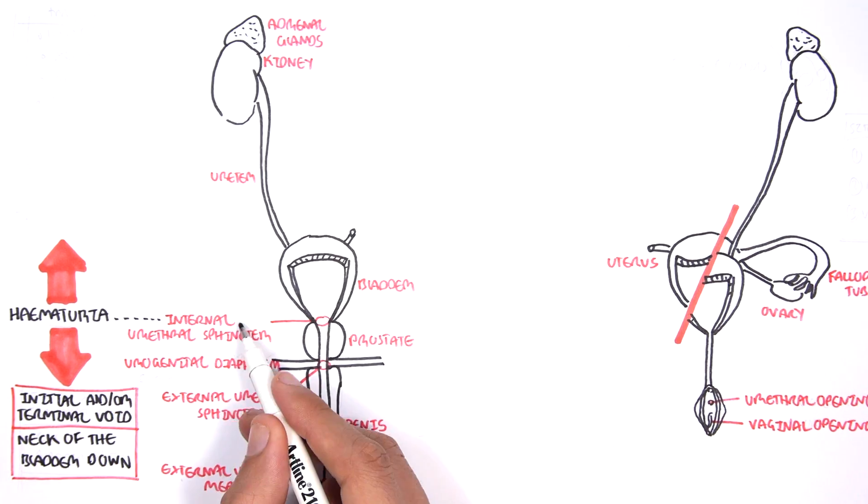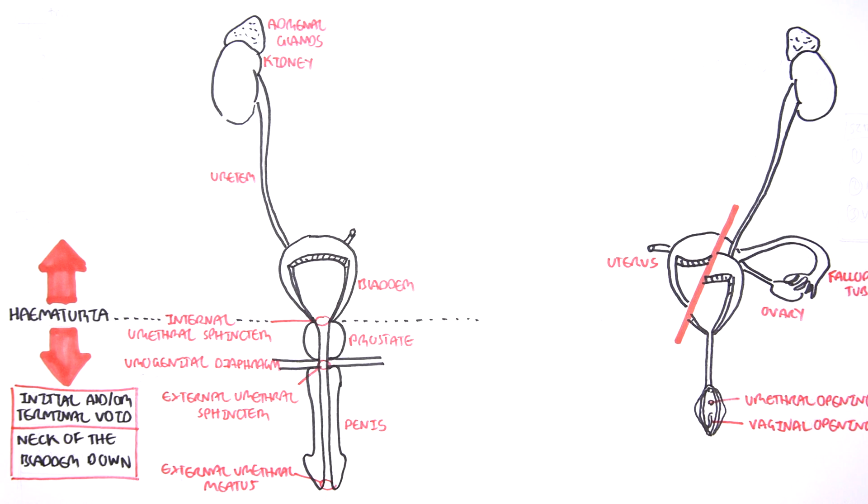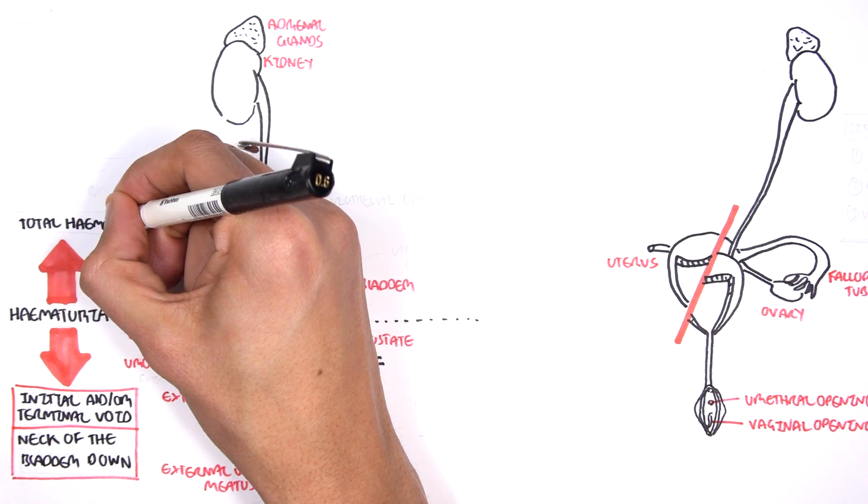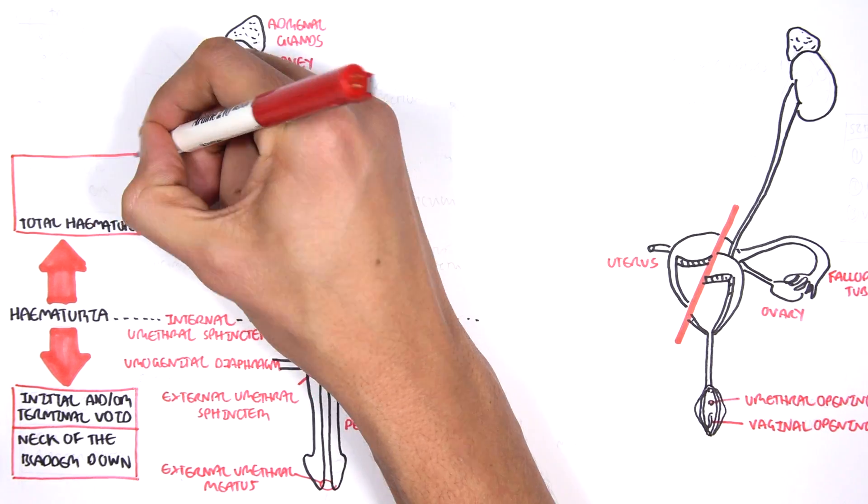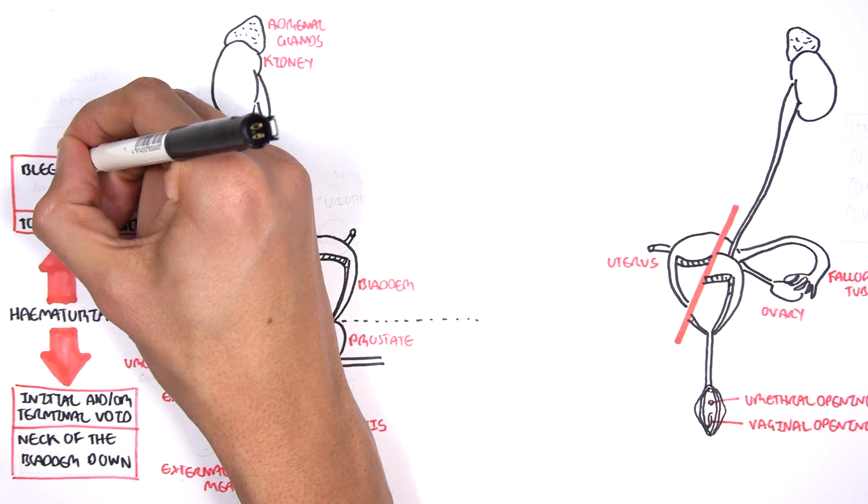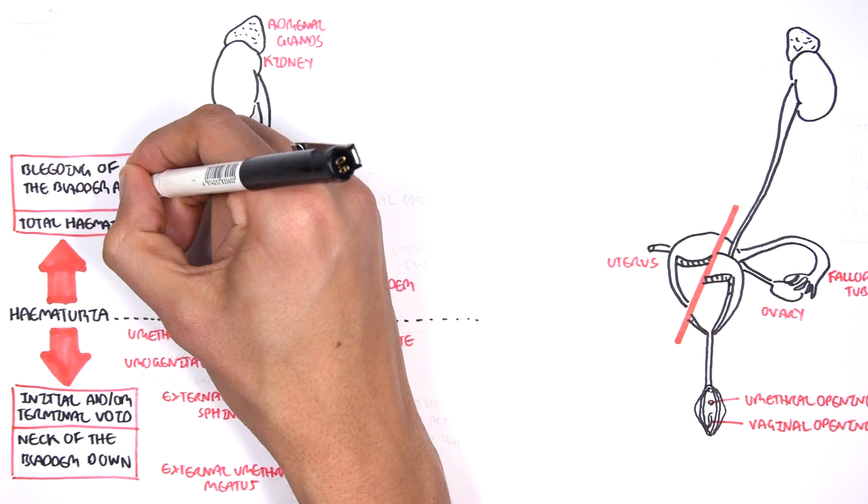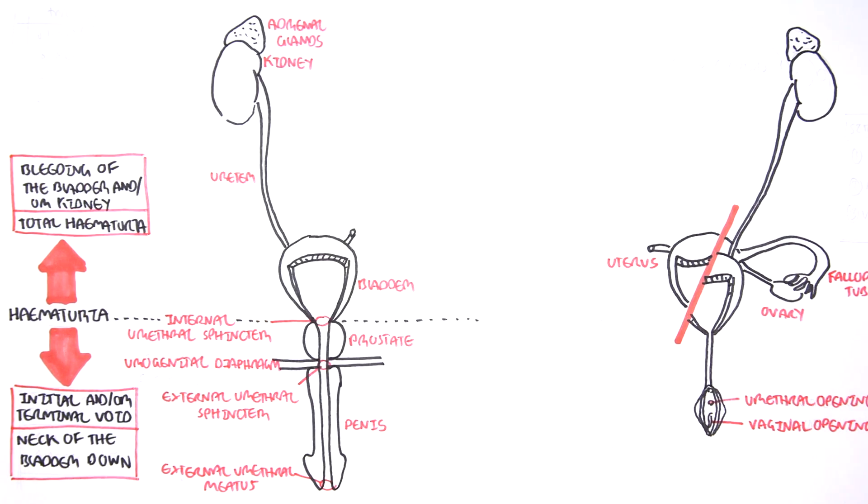If hematuria occurs initially or on terminal voiding, like at the end of peeing, the site of bleeding or the cause is probably from the neck of the bladder down. Whereas if the hematuria happens from start to finish, so total hematuria, the bleeding would most likely originate from the bladder or from the kidneys.